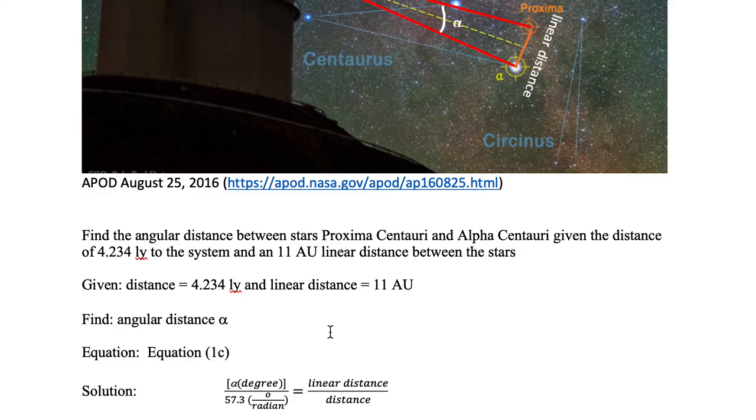This equation is where we have Alpha degrees divided by 57.3 in units of degree per radian, which equals the linear distance divided by the distance. We are given the linear distance and the distance, so we can substitute these into the right-hand side of this equation.